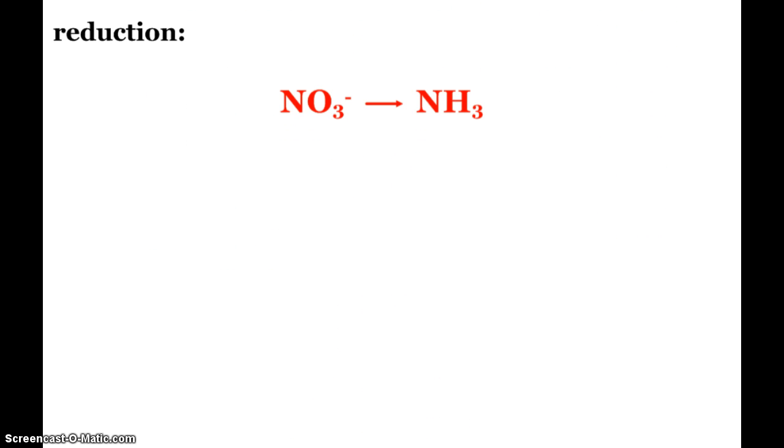So the other half, reduction, I've got nitrate turning into ammonia. I have one nitrogen on each side, so that's good. So now I go into O charge, oxygens, hydrogens, charge. Three oxygens are going in, so I'm going to have to add three waters on the product side, so now my oxygens are balanced.